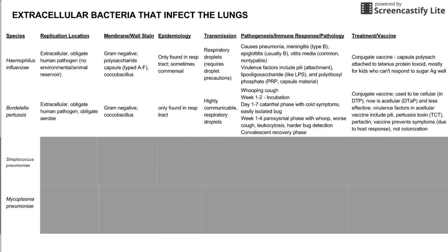The vaccine for whooping cough has been around for a while. It used to be cellular, paired with diphtheria and tetanus in DTP. The newer vaccine is now acellular, called DTaP, where P is pertussis and A is acellular. Recent studies have shown this acellular vaccine is less effective. Virulence factors included in the vaccine are pili for attachment, a pertussis toxin, and a protein called pertactin. Importantly, the vaccine prevents symptoms — it prevents the host response to Bordetella pertussis — but it does not necessarily prevent colonization. Someone can be infected with Bordetella pertussis even after vaccination and never express symptoms.